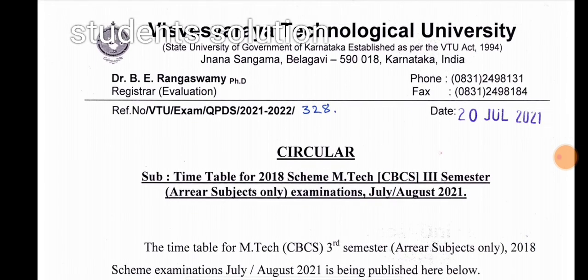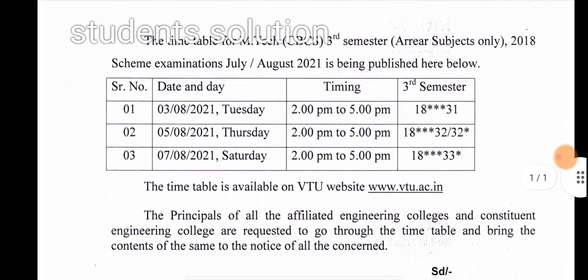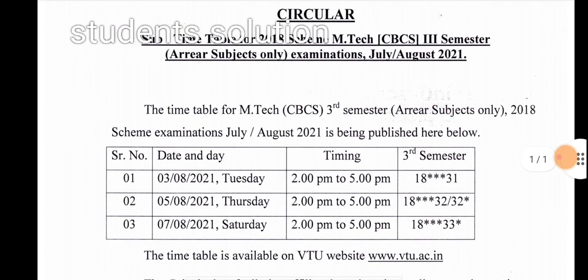The timetable for 2018 Scheme M-TECH CBCS Third Semester area subject only in July/August 2021. In 2018 Scheme, M-TECH CBCS Third Semester data is also available. The timetable for M-TECH CBCS Third Semester area subject only in July/August 2021 is being published here.